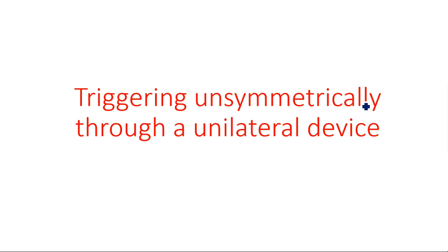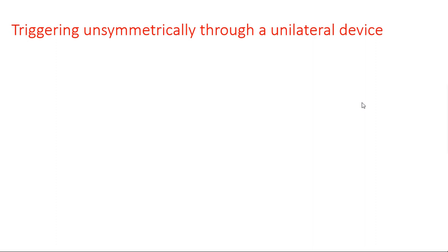In this video I am explaining about unsymmetrical triggering through a unilateral device. In the previous video I explained there are two different types of triggering techniques: symmetrical triggering and unsymmetrical triggering. The difference between them depends upon the number of sources. If we are using a single source for generating both triggering pulses, we call it symmetrical triggering. If we are using two separate generators, we call it unsymmetrical triggering.